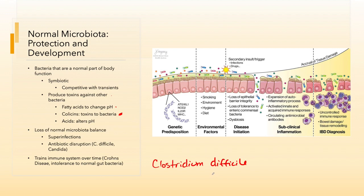There's a C1 and a C2 toxin — I think they call them type A and type B now — that these organisms produce. Both of these toxins can cause severe gastrointestinal upset, diarrhea, and even ulcerative colitis.